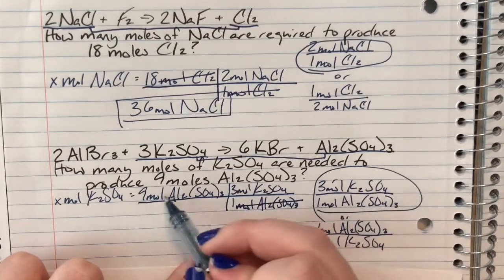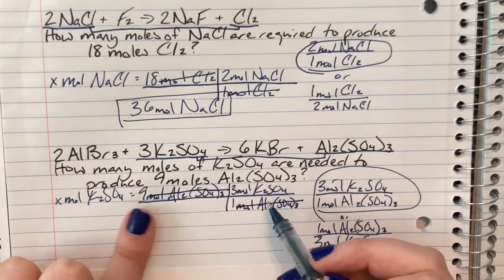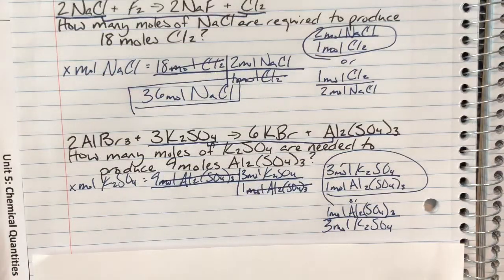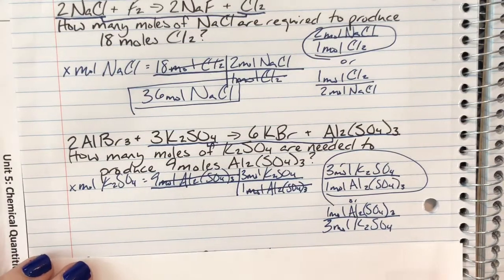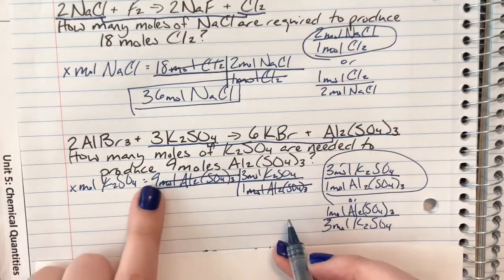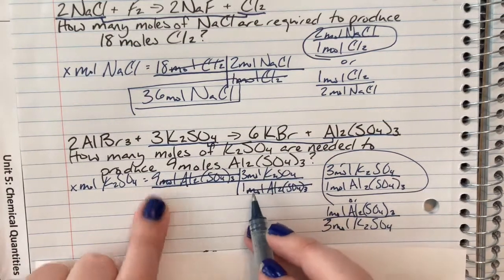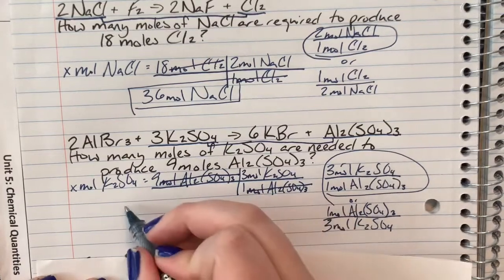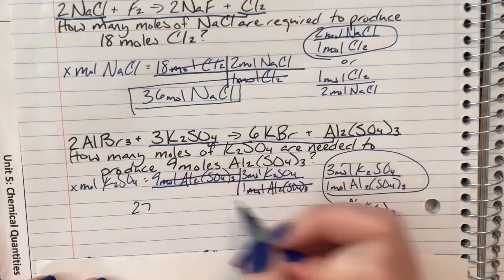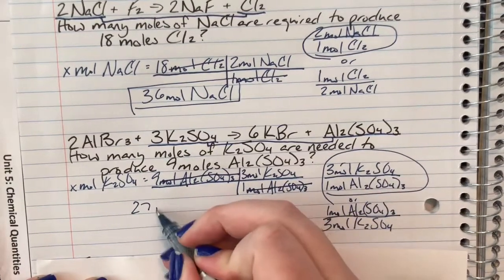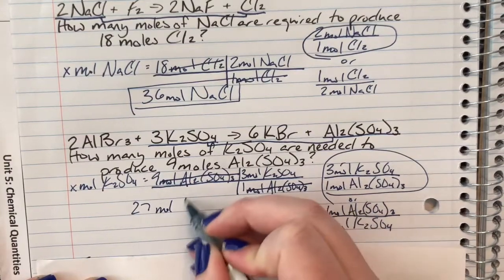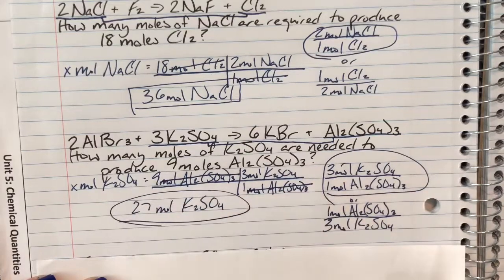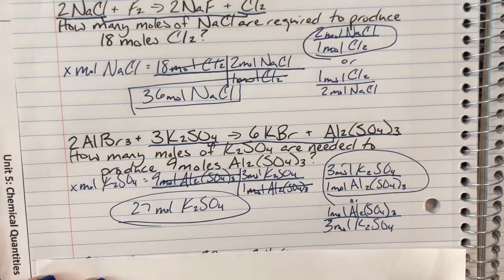Moles of aluminum sulfate will cancel since I have it on the top and the bottom, leaving me with moles of potassium sulfate, which was my desired unit — so I know I'm done. I'll plug this into the calculator, multiplying everything on the top and dividing by everything on the bottom. 9 times 3 gives me 27, and the only English left in my math is moles of potassium sulfate. That is my final boxed answer.